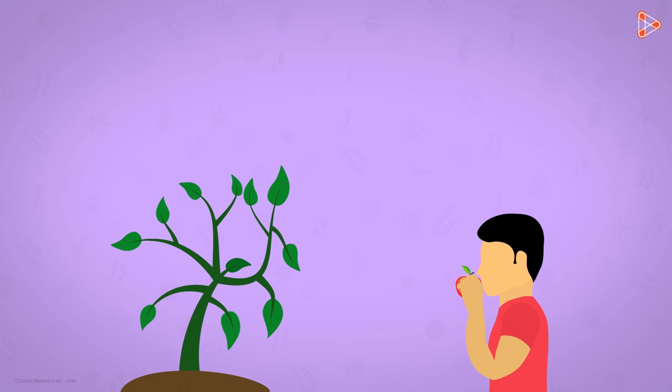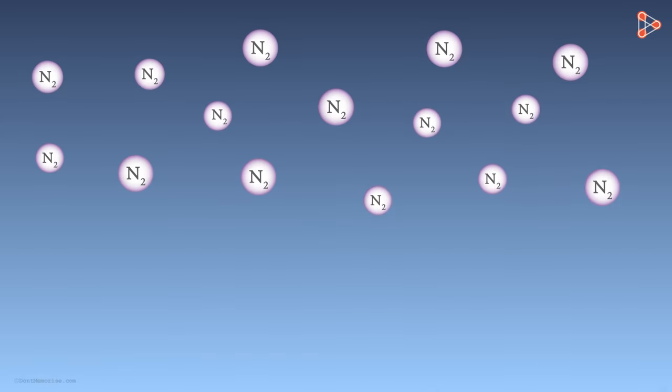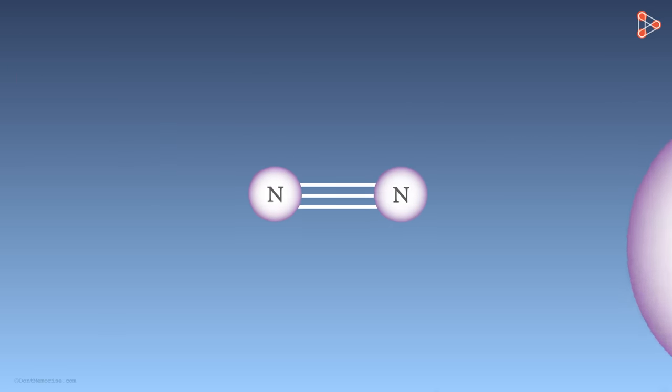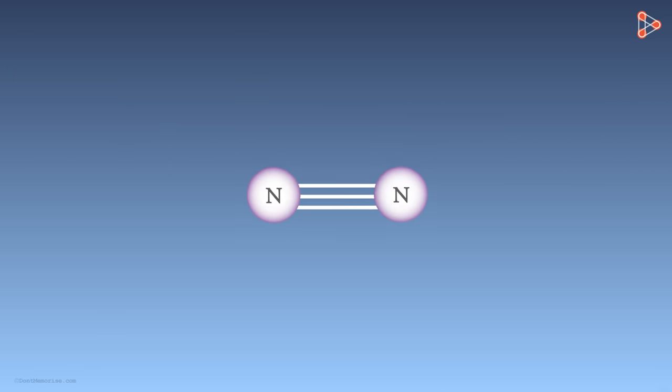Problem of nitrogen consumption by animals got solved. But what about the problem of nitrogen consumption by plants? Nitrogen is present in abundance in the atmosphere. However, the divalent molecule has a very strong triple bond shared between its atoms and it is very difficult to break this bond.